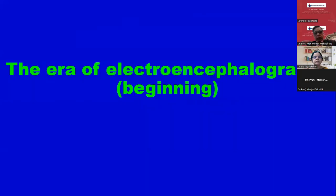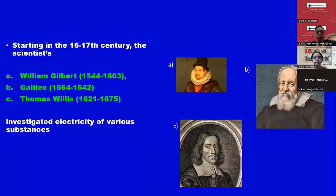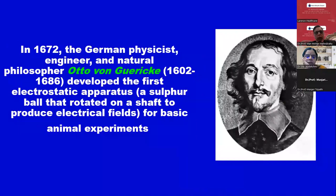The era of neuroencephalography began. Starting in the 16th to 17th century, scientists William Gilbert, Galileo, Thomas Willis — of the Circle of Willis — investigated electricity of various substances. Before Hans Berger, there was another German physicist, engineer, and natural philosopher — Otto — who developed the first electrostatic apparatus, a sulfur ball that rotated on its shaft to produce electrical fluids for basic animal experiments. These animal activities cannot be directly extrapolated to humans. They had to be further proven, which they were later.